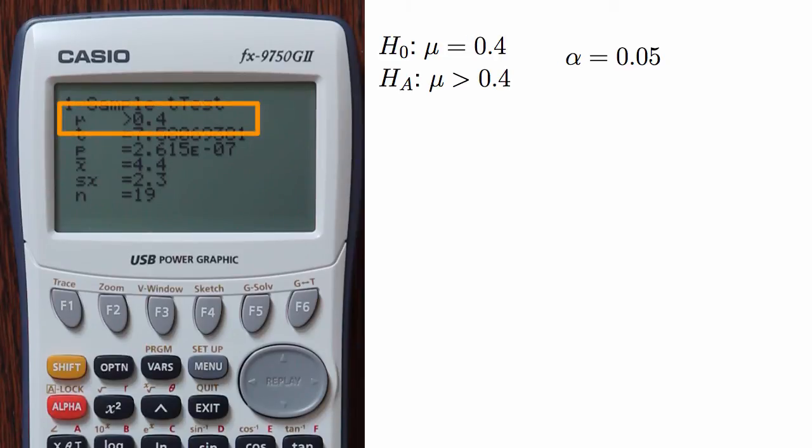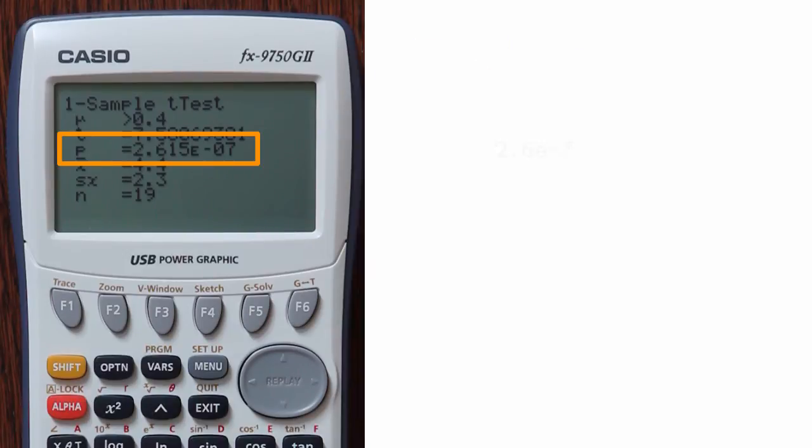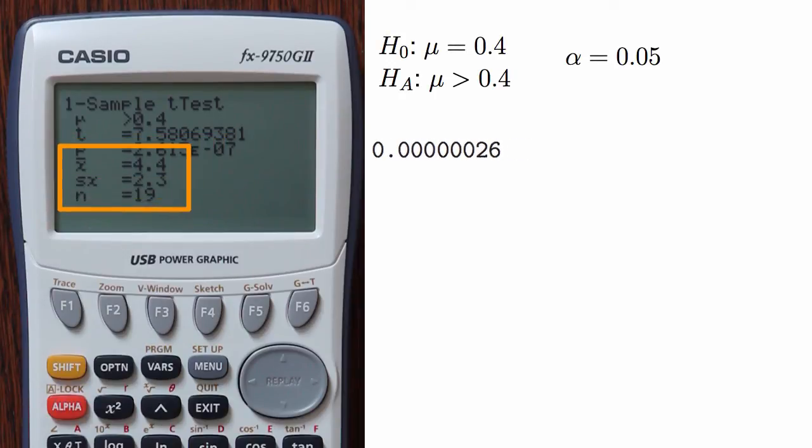I can confirm the alternative hypothesis matches what I specified earlier. The test statistic is 7.58. The p-value is 2.6e to the negative 7th, which is in scientific notation. To put this into standard decimal form, I could write 2.6 and then, since it is e negative 7, move the decimal to the left by 7 spots. Following the p-value, summary information for the sample is provided.